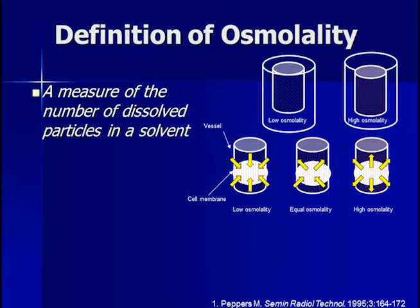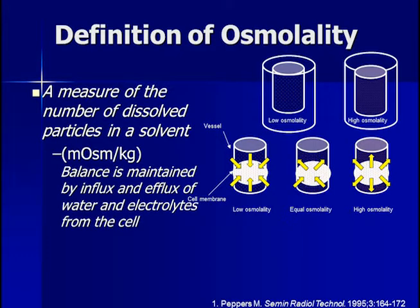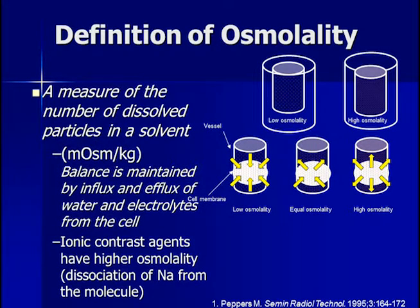Osmolality is a measure of the number of dissolved particles in a solvent. If we place a solution with low osmolality into a container, molecules will move to achieve equilibrium. If a permeable smaller container with high osmolality is placed in a larger container, there will be a net efflux out of the smaller container into the surrounding container, until equal osmolality is achieved on both sides. Ionic contrast agents typically have higher osmolality than blood, causing water influx or solute efflux.